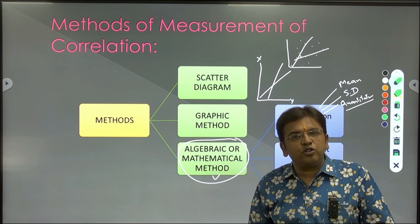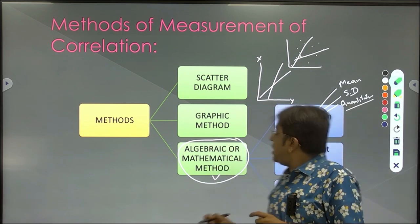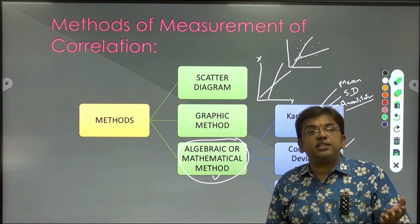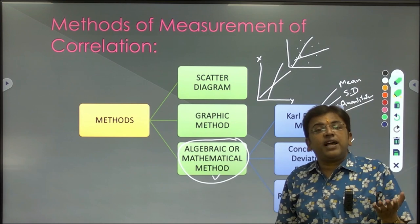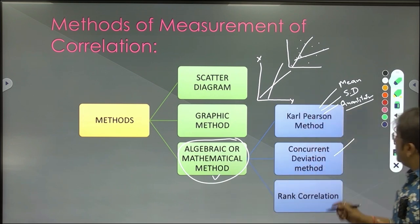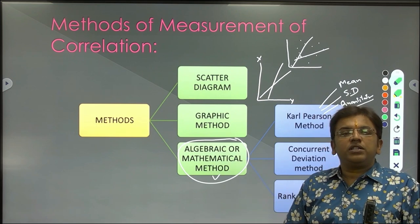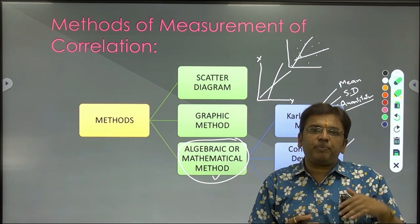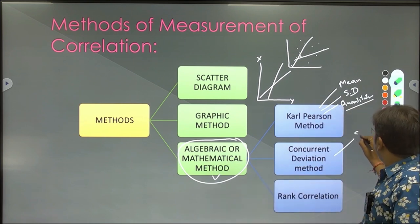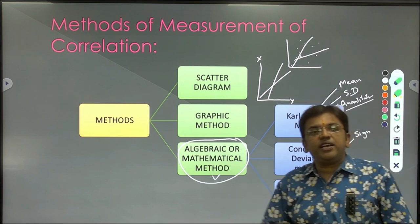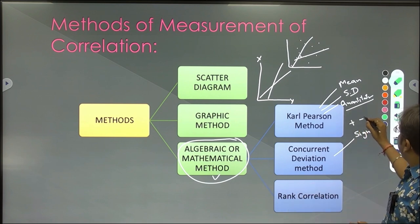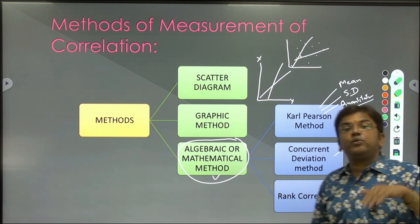The second algebraic method is concurrent deviation. Sometimes a researcher does not know how to calculate mean, standard deviation and other values — for example, a researcher from an arts background. For such a person, concurrent deviation is the best method. Here there are two series — X and Y — and by comparing consecutive values we determine whether the next value is positive or negative. If the next value is bigger, you assign a positive sign; if it is lesser, a negative sign; and on the basis of these signs you calculate the value.